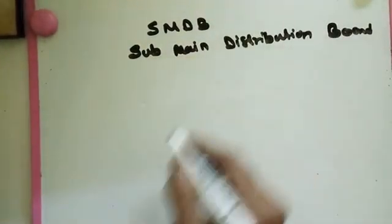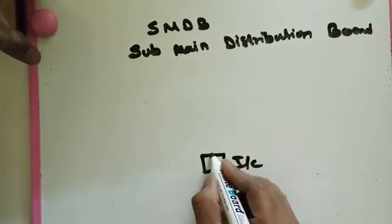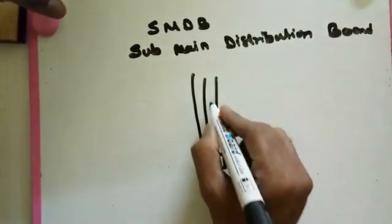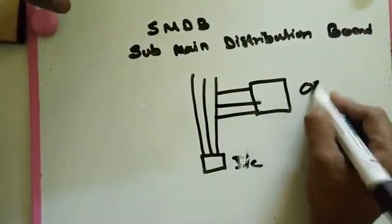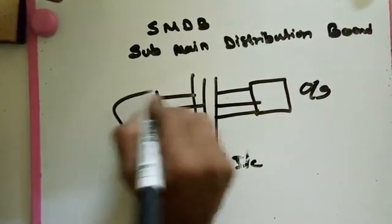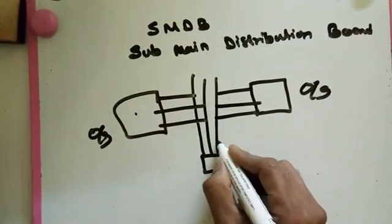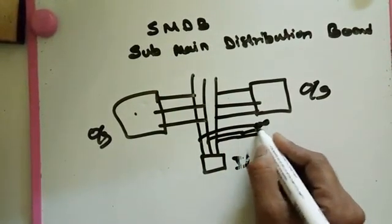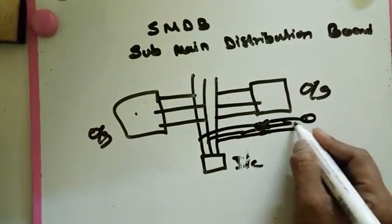So basically the structure is like this: incoming, then main bus bar, then branch bus bar, and then outgoings. For indication, we take a tapping to a fuse and then to indicator lamps.